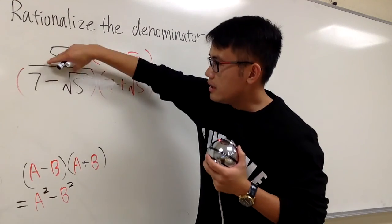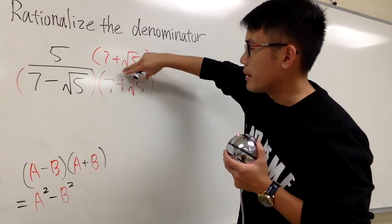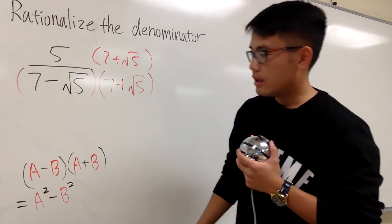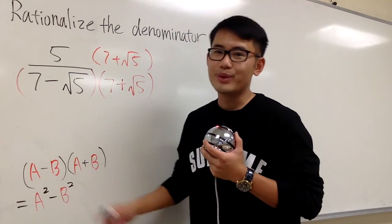And the idea is, here we have the minus situation, which is the first one. I have to multiply by the second one, so that the quick way to do this is the first term squared, and then subtract the second term squared.